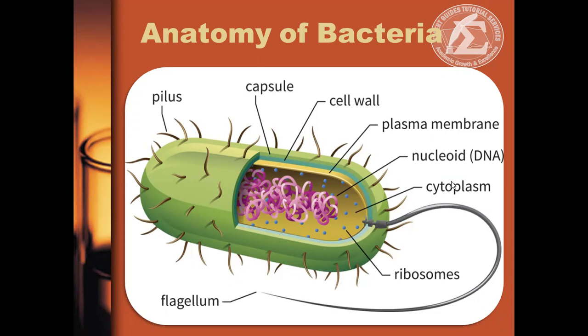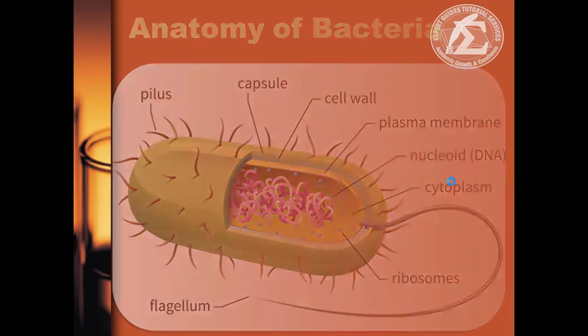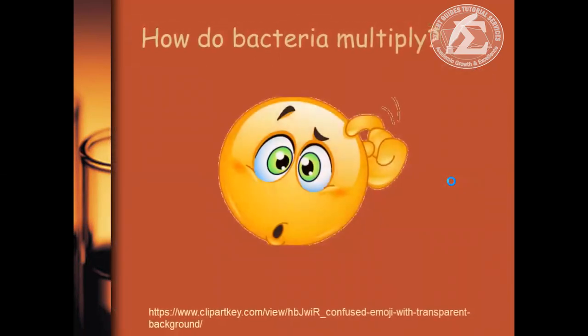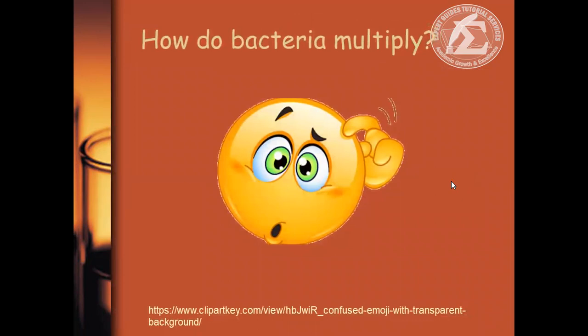Bacteria can also have pili — plural of pilus — hair-like structures on the surface that attach to other bacterial cells. Some also have a flagellum, long whip-like protrusions that allow cells to move.